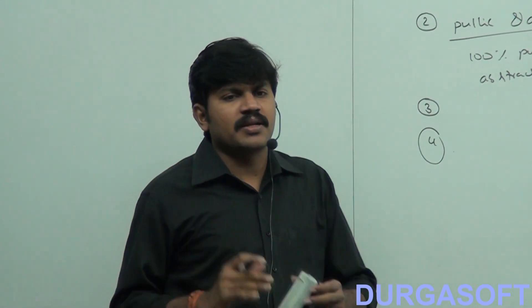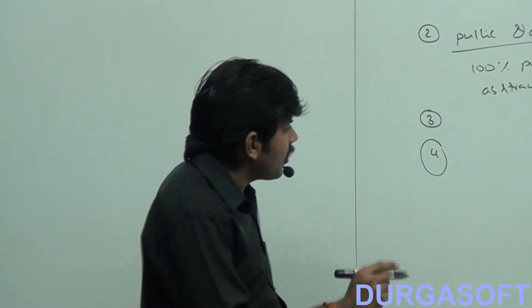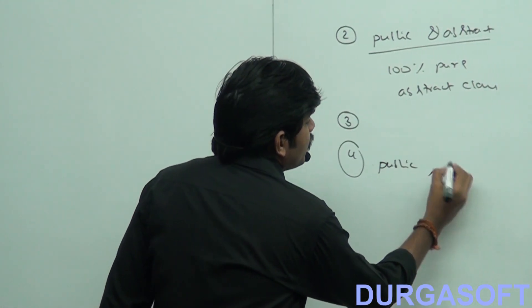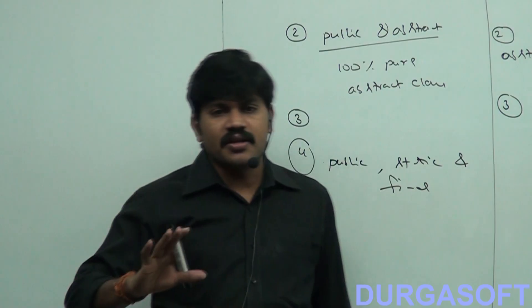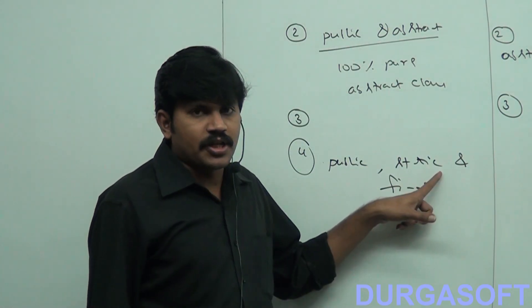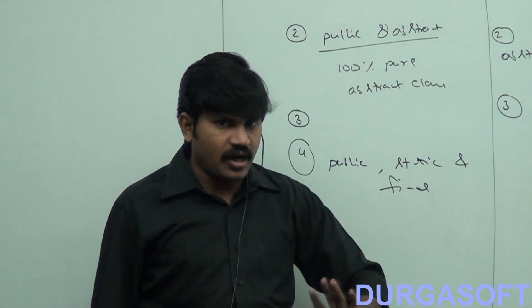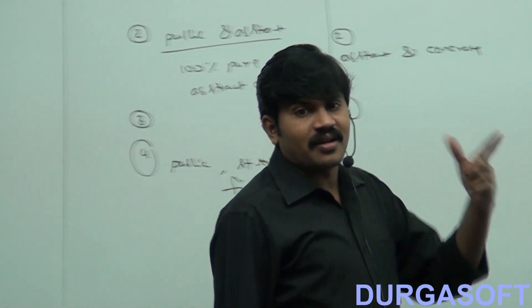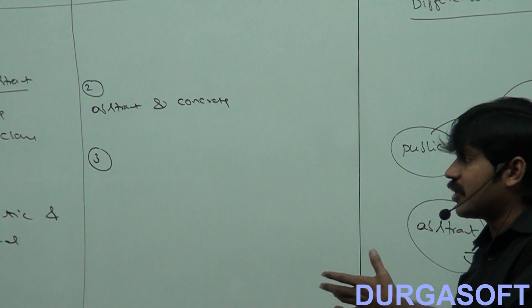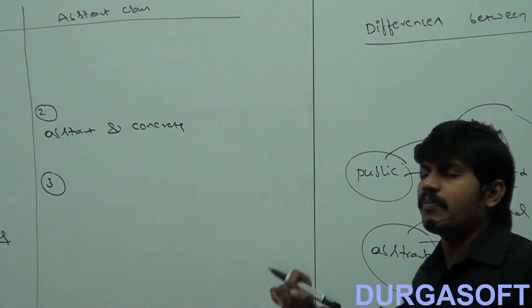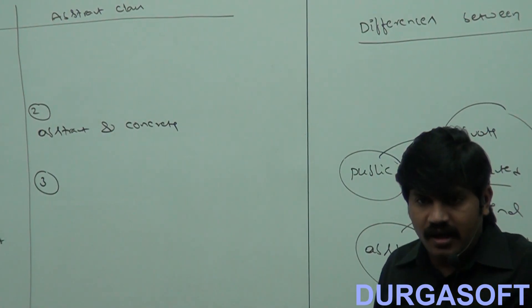Next, points four through six are about variables. Every variable present inside an interface is always public, static, and final, whether we are declaring it that way or not. But abstract class variables need not be public, static, or final.